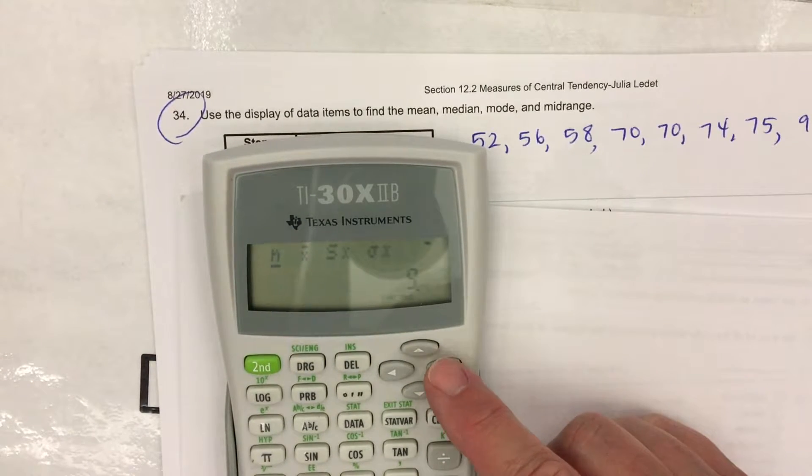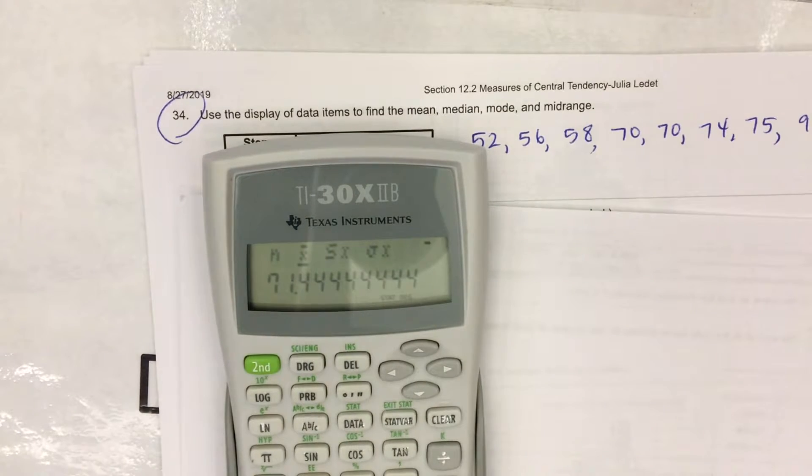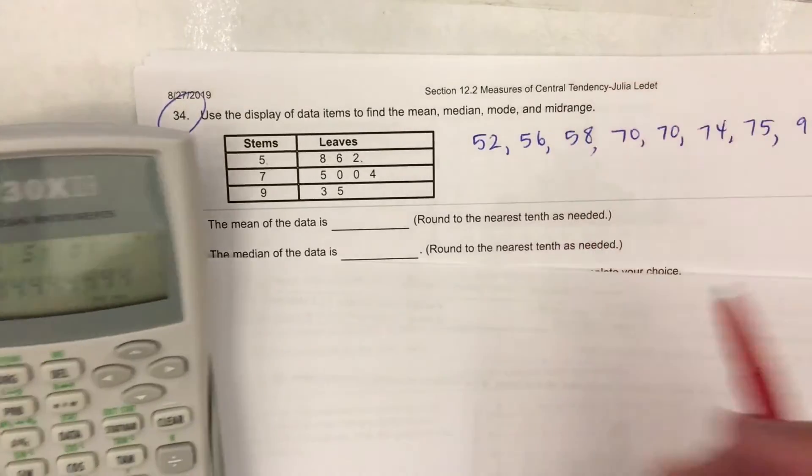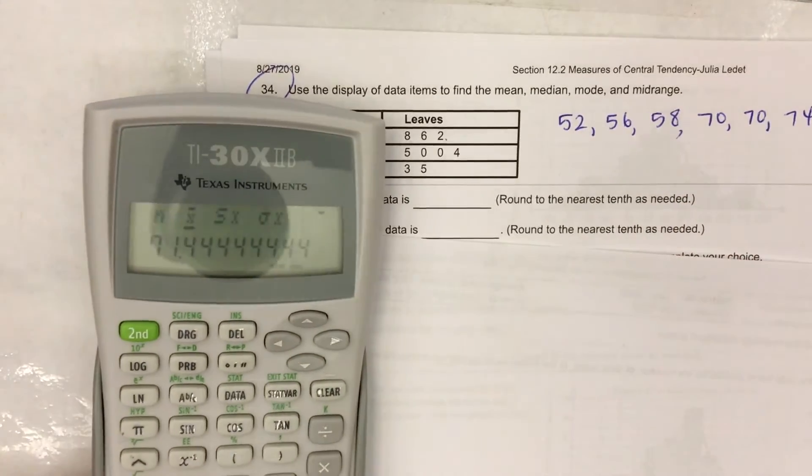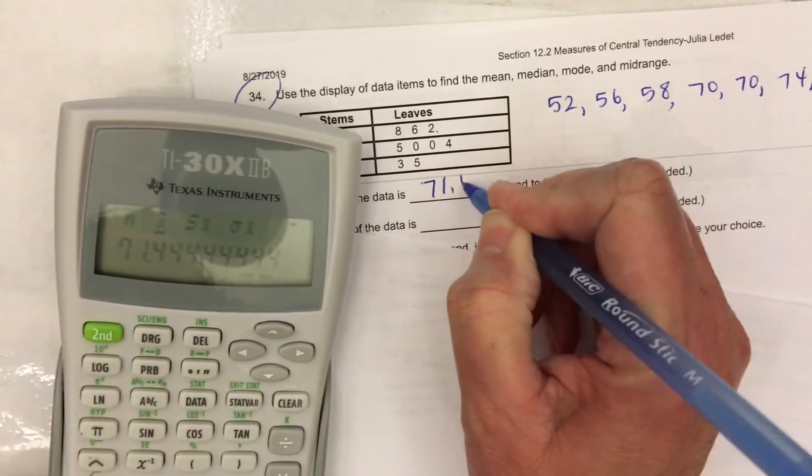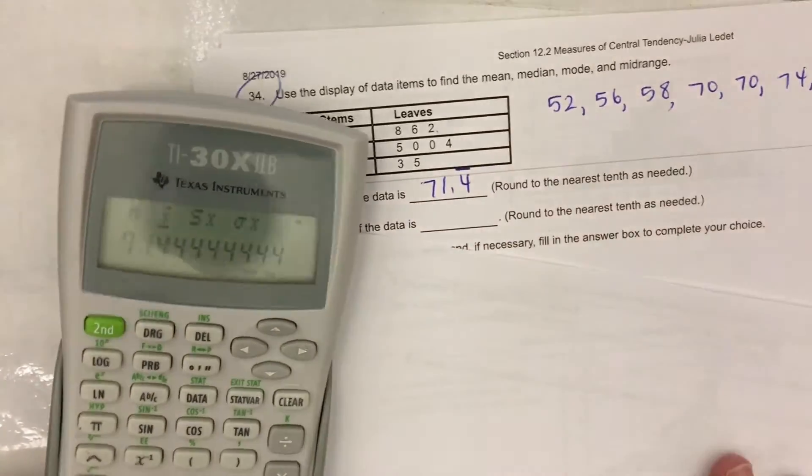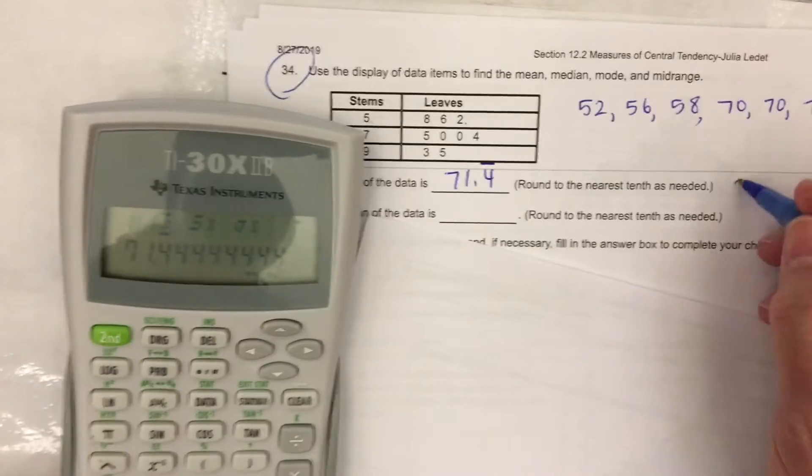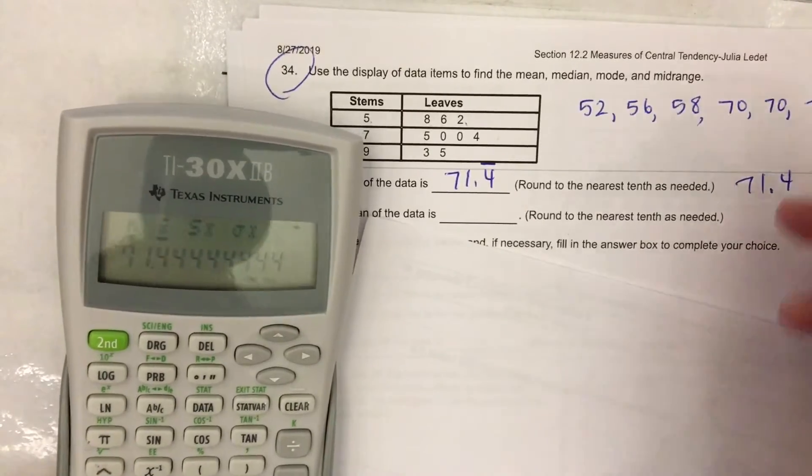Scroll to the right. X bar. That is the mean. Right there. And that's what we wanted to calculate. Well, we want to calculate more than that. But there's the mean. Seventy one point four repeating. Round to the nearest tenth. Seventy one point four.